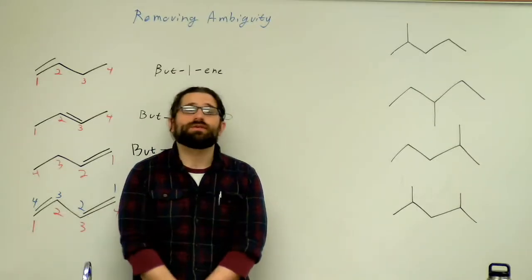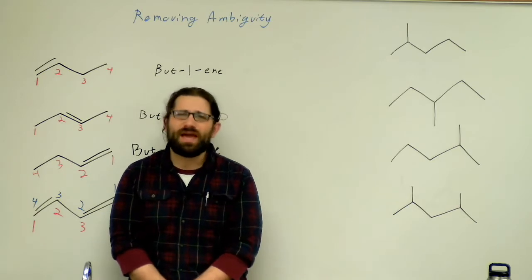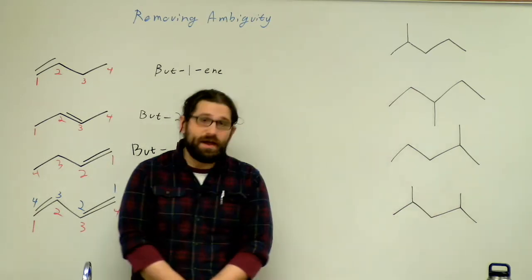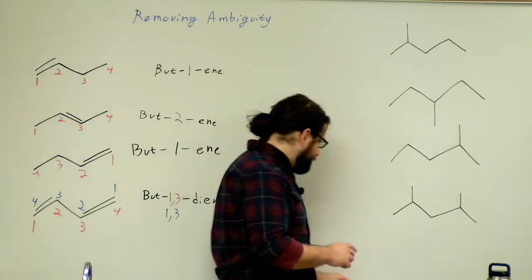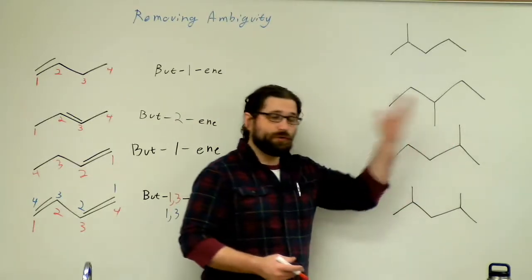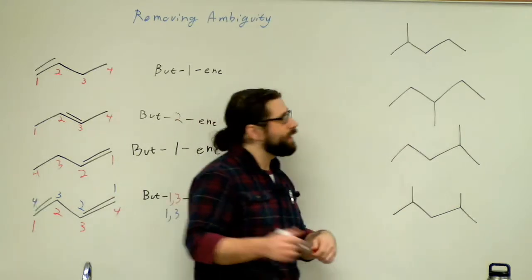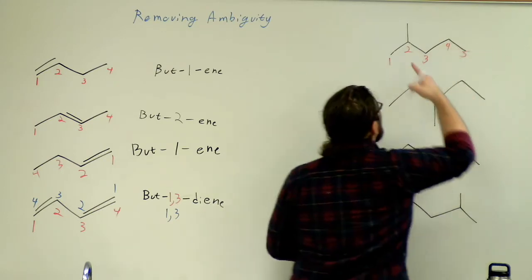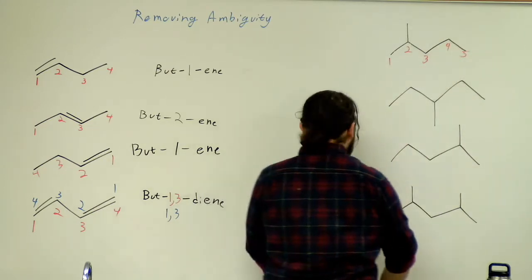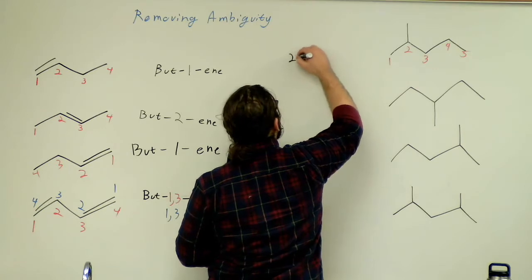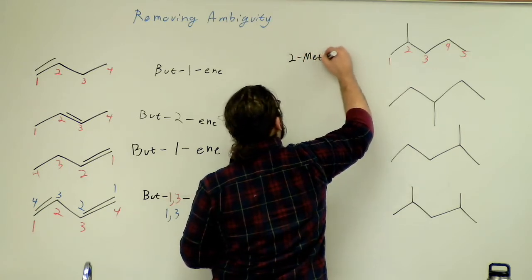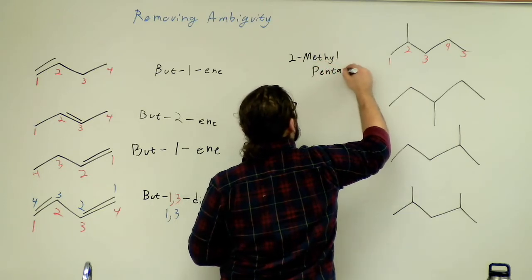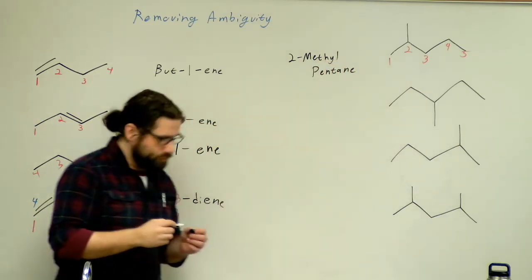So the same thing is going to work with using methyl or really any alkyl group. My first one up here, I've got a five-carbon chain with a methyl group. Let's number this. And since our methyl group is further to the left, let's number it from left to right. So I'm going to go one, two, three, four, five. So my methyl group starts on carbon number two. So I will say 2-methylpentane.